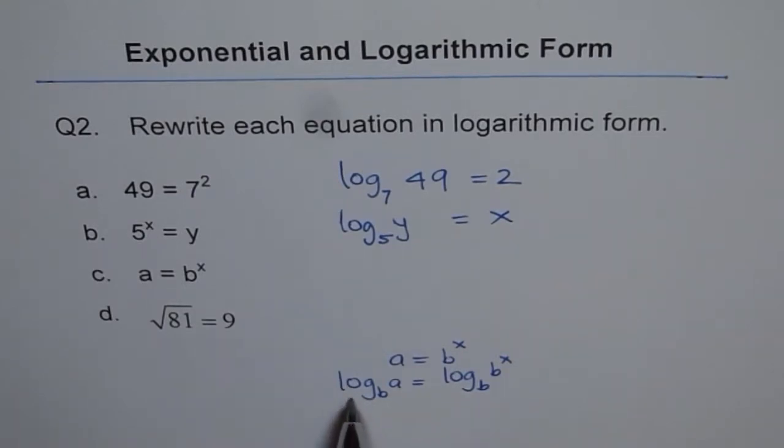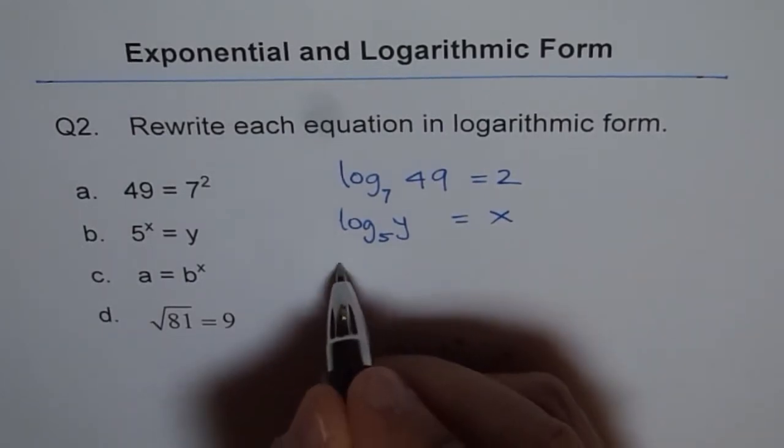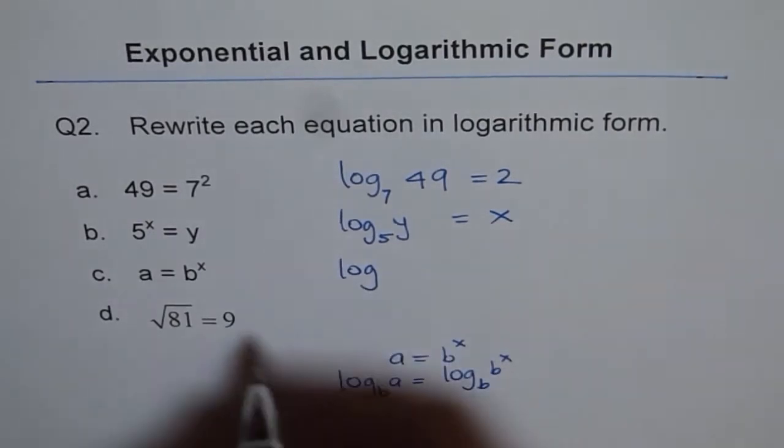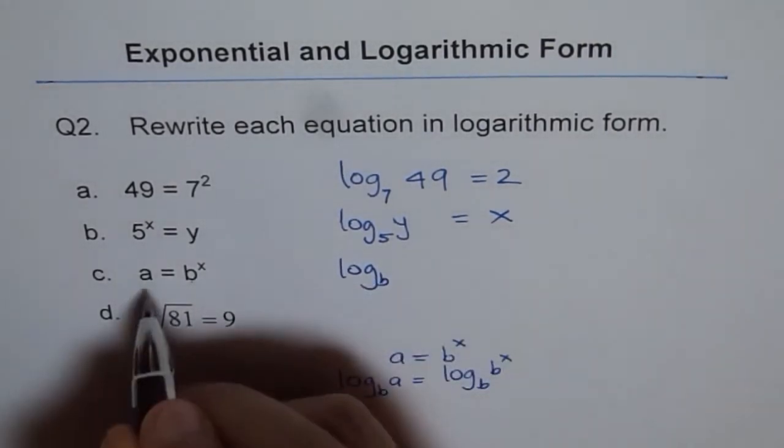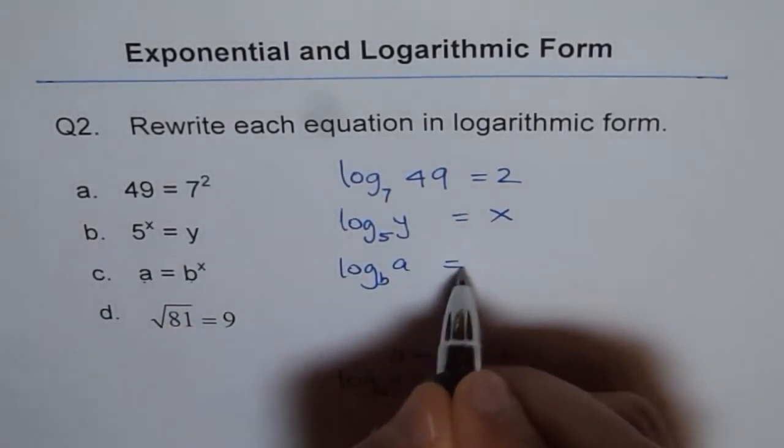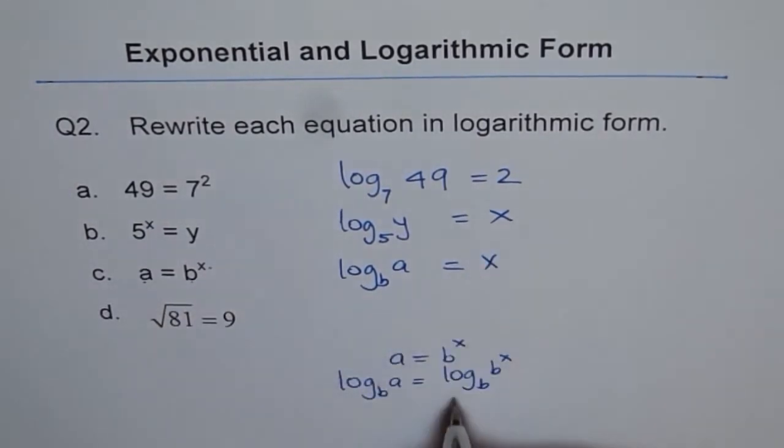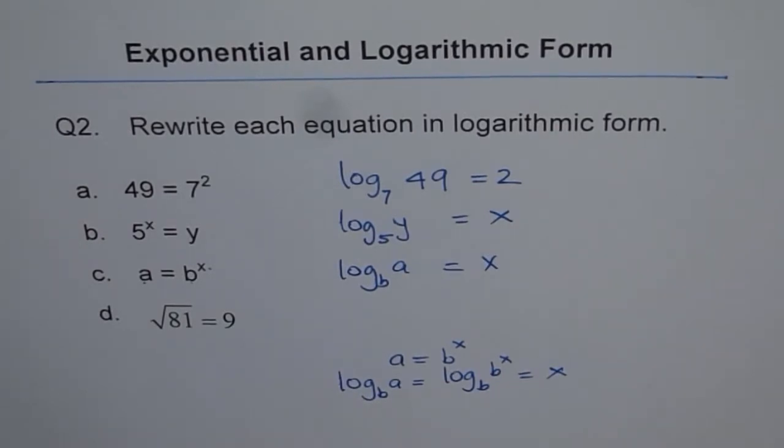Now, from here, I get log to the base b of a and this is log base of b is 1 to the power of x. We write here log base is b of a equals to x. This part is equal to x. That is how you write your logarithmic form from exponential form.